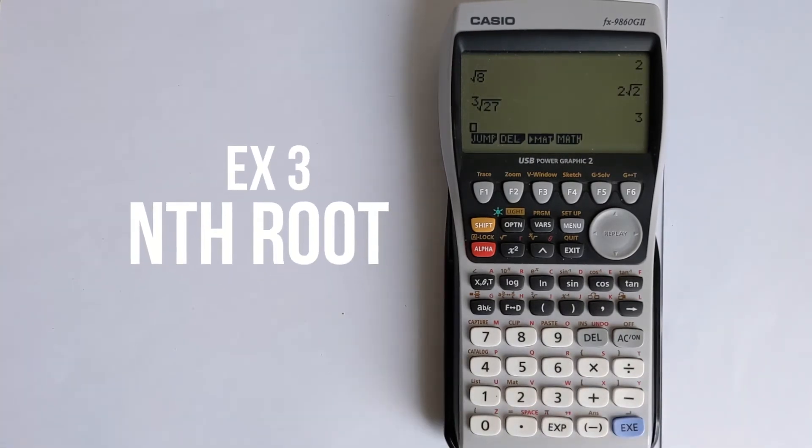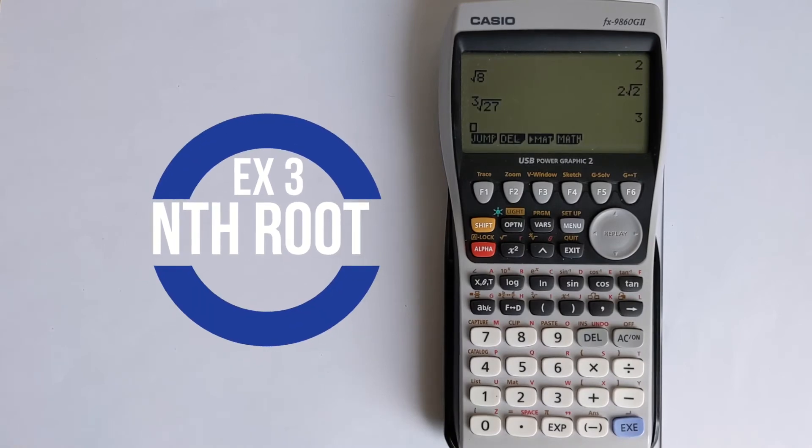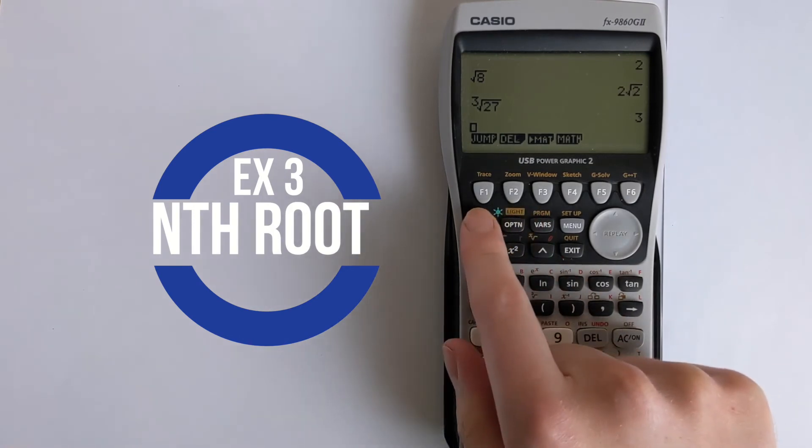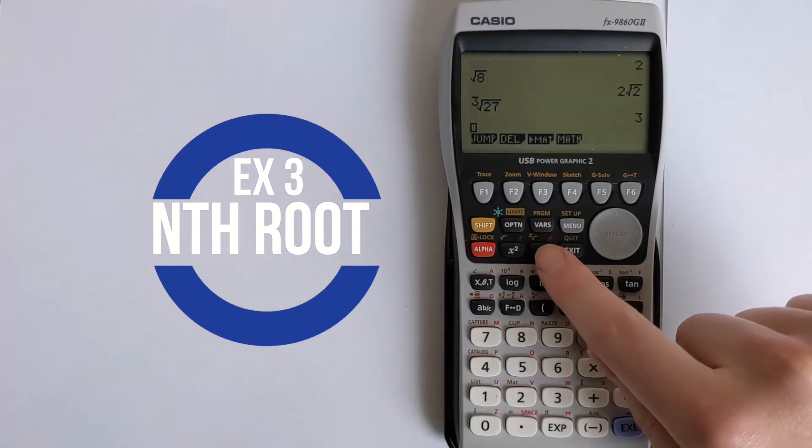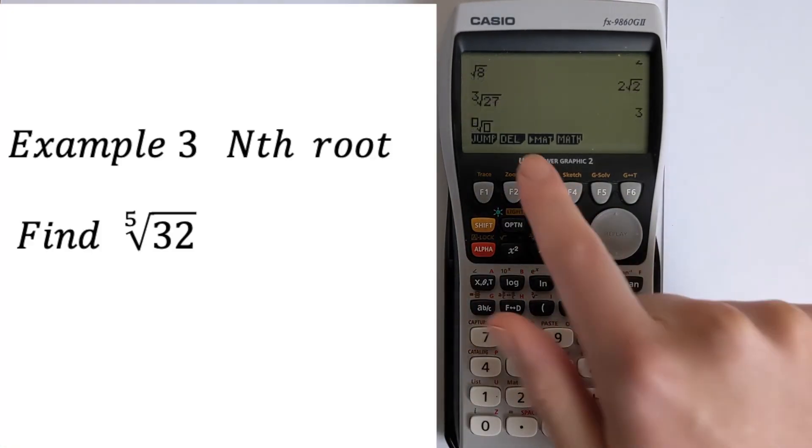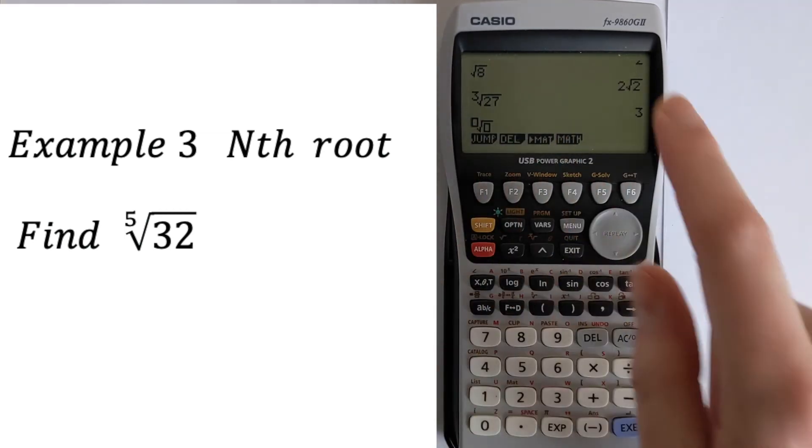The next thing it can do is the nth root. So it can take the root of anything with any x value. So we press shift and then we're looking at root x here and it will give us an option here for what root we want to take.